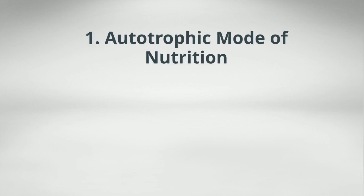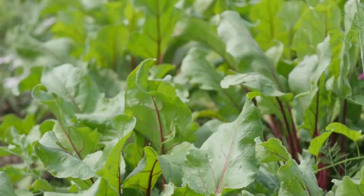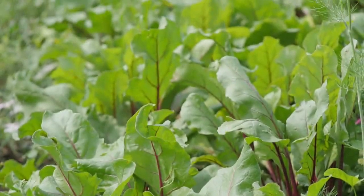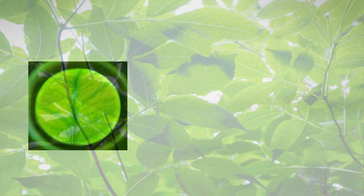Autotrophic mode of nutrition. In Greek, auto means self and trove means nutrition, which means self-nutrition. In autotrophic mode of nutrition, organisms prepare their own food. This is seen in green plants and autotrophic bacteria. These autotrophic organisms contain a green pigment called chlorophyll.